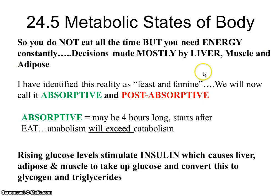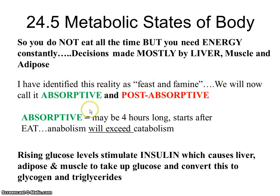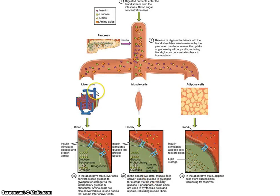This part of the chapter focuses on the feast and famine concept, also called absorptive versus post-absorptive states. You do not eat at all times but need energy always. Decisions are made mostly by the liver, skeletal muscle, and adipose tissue. The absorptive state can be about four hours long and starts after you eat — anabolism, or synthesis reactions, will exceed breakdown reactions. Rising glucose levels stimulate insulin, causing the liver, adipose, and muscle to take up glucose and convert it to glycogen and triglycerides.